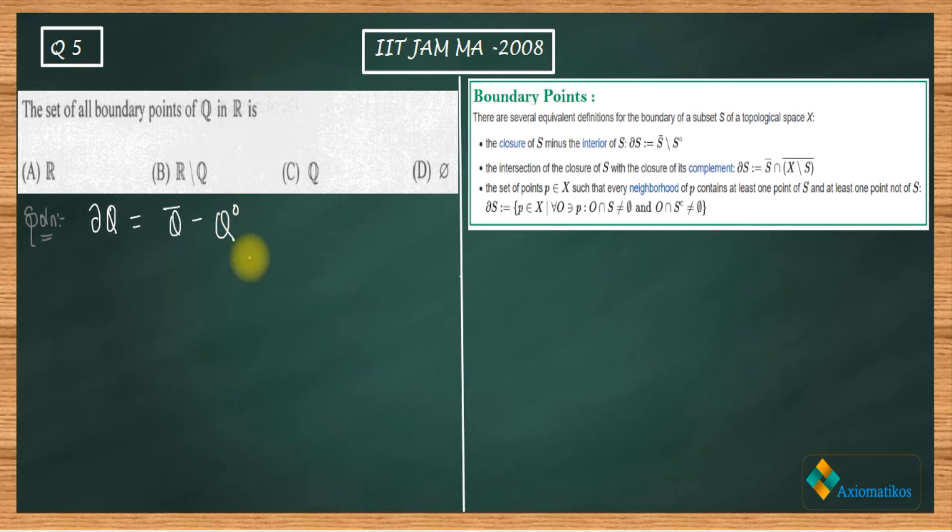Now if you know a little bit of analysis about the set of rationals, what you know is that the closure of Q is actually Q union Q derived set. So Q derived means it contains all the limit points. Now what do you know about Q dash? Q dash - the limit points of rationals. You know the whole R are the limit points of the rationals. So you will get Q union R.